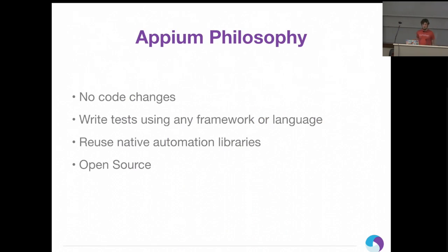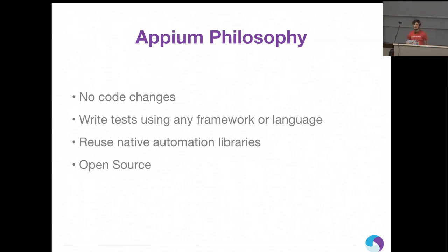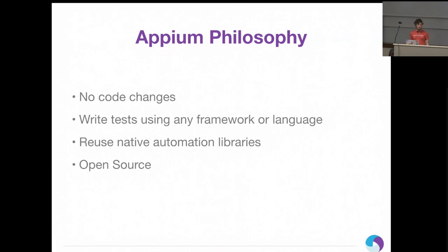A little bit more about Appium as an open source project: it's about three years old now. We had our major 1.0 stable release maybe eight to nine months ago. There are something like 200 contributors on GitHub. Most of the contribution comes from Sauce Labs developers, but we encourage open source contributions from everyone. It's still a super active project.